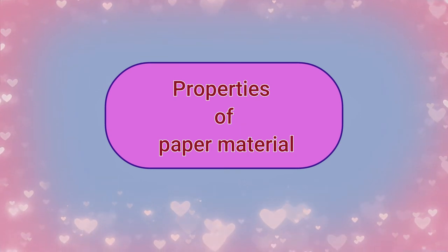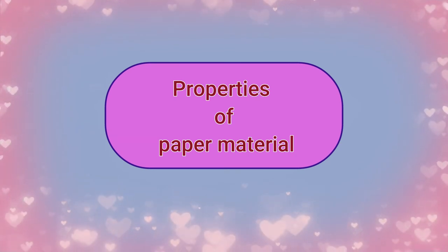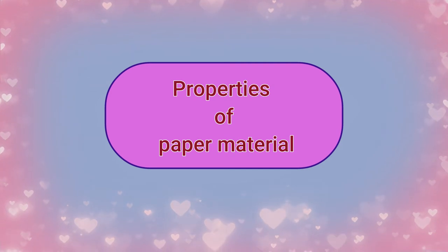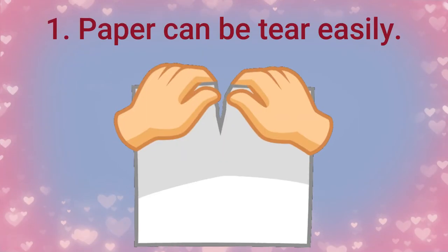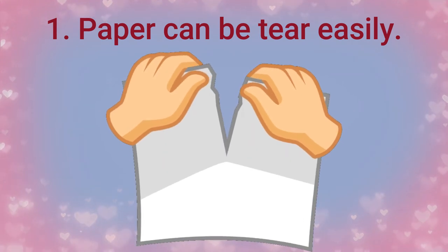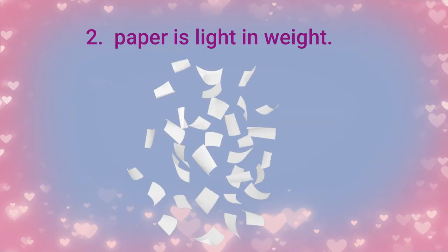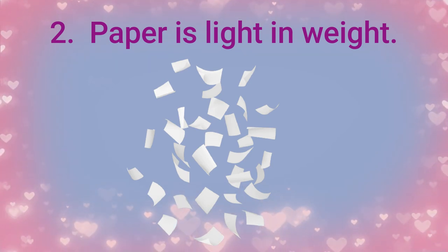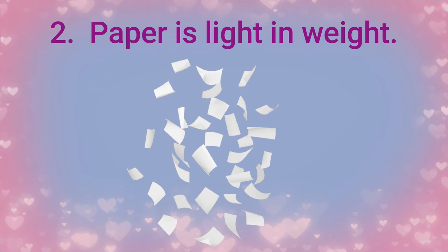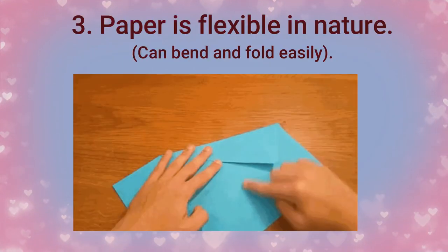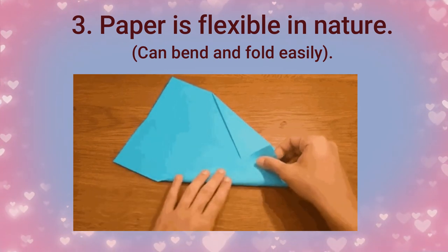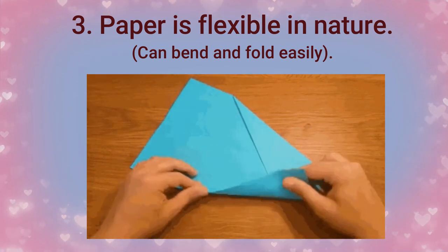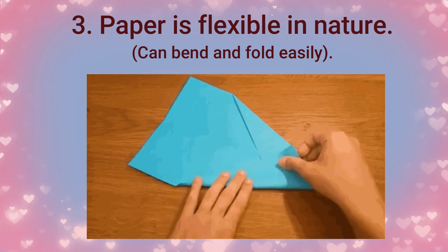Now let's learn the properties of paper. Properties means the qualities or attributes of the material. First, paper can be torn easily. Second, paper is light in weight, meaning objects made from paper material will also be light in weight. Third, paper is flexible in nature — it can be bent and folded easily to make anything.